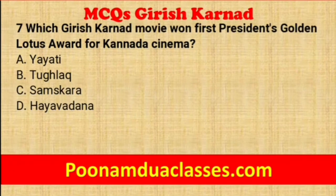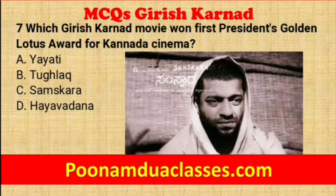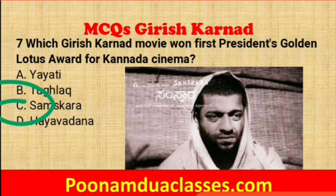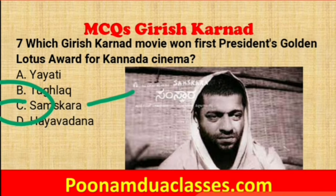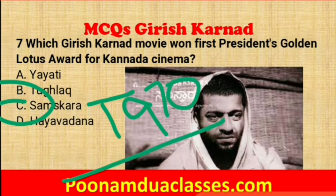Question number seven: which Girish Karnad movie won the first President's Golden Lotus award for Kannada cinema? The correct answer is option C — Samskara. In the Kannada movie Samskara, he made his screen debut and won the first President's Golden Lotus award. Karnad made his acting as well as screenwriting debut in the Kannada movie Samskara, released in 1970, based on a novel by U.R. Ananthamurthy and directed by Pattabhirama Reddy.